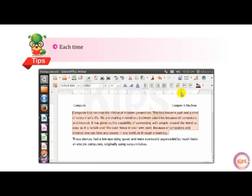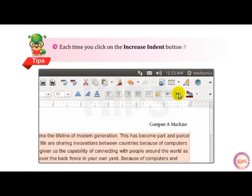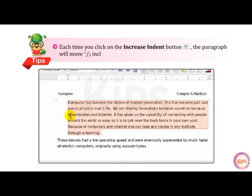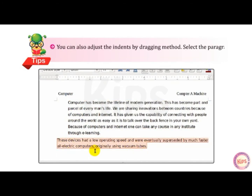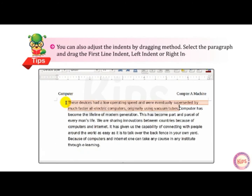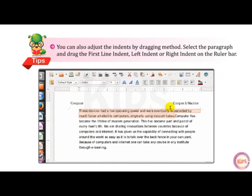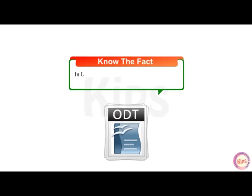Click on the Decrease Indent button to move the text half an inch closer to the left margin. Each time you click on the Increase Indent button, the paragraph will move one inch away from the left margin. You can also adjust the indents by dragging: select the paragraph and drag the first line indent, left indent, or right indent on the ruler bar. In LibreOffice Writer, a file is saved with an extension .odt.